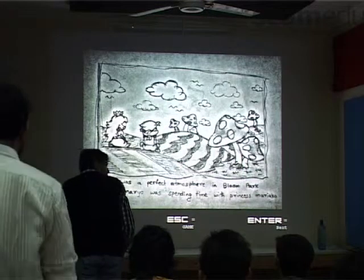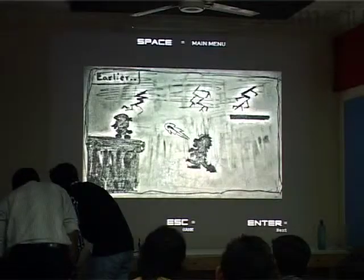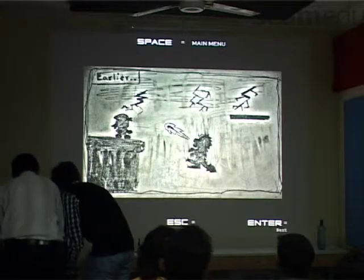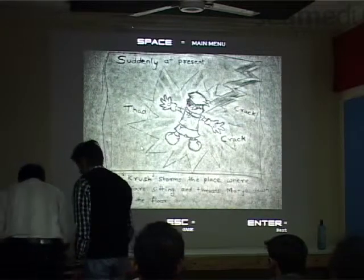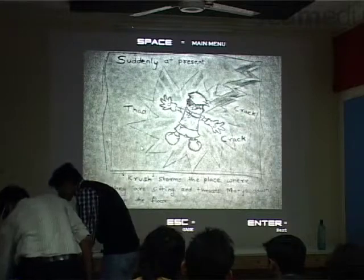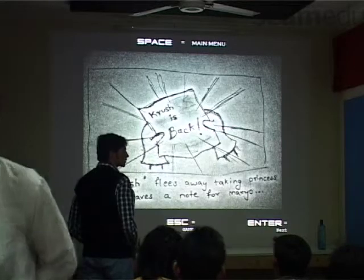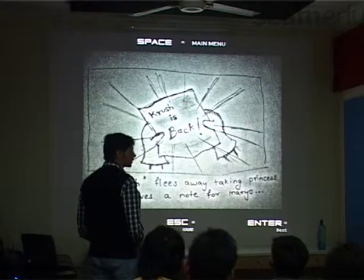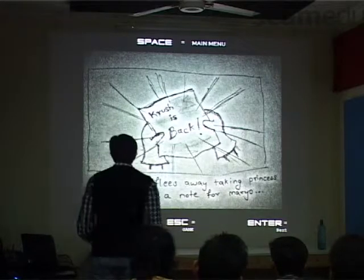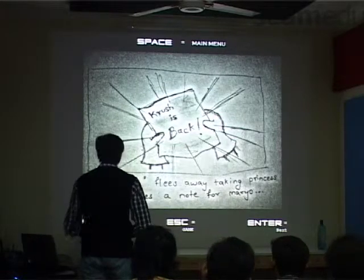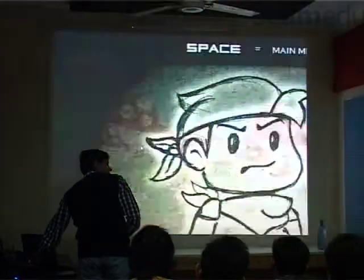So now this is just a storyboard section. It contains a 5-frame storyboard. We had just created a short story regarding Mario. Initially we had planned for two levels. There was a character called Crush, the main villain of the Dragon. He will appear at the end of the second level. And you can see where he leaves a note to Mario saying that Crush is bad. And finally the rescue begins for Mario.